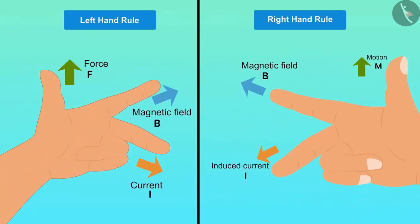As Fleming's left hand rule tells the direction of the force acted due to the electric current and magnetic field, conversely Fleming's right hand rule gives the direction of the induced current when a conductor is placed in a changing magnetic field.